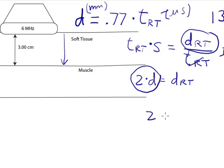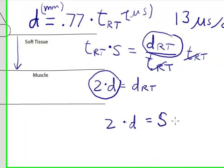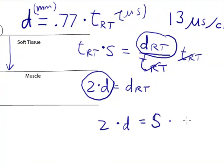I have 2 times D equals the speed of propagation, in this case in soft tissue, times the round-trip time. Then I can divide both sides by 2,